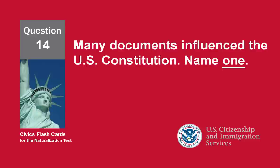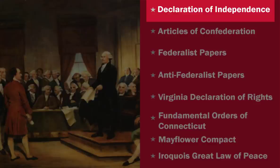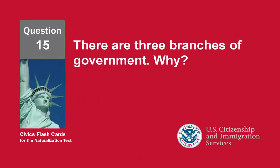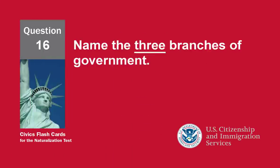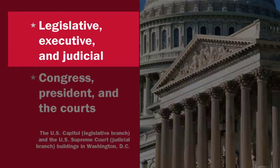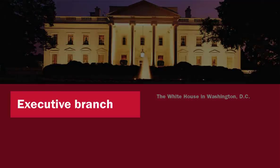Many documents influenced the US Constitution. Name one. Declaration of Independence. There are three branches of government. Why? Checks and balance. Name the three branches of government. Legislative, executive, and judicial. The President of the United States is in charge of which branch of government? Executive branch.